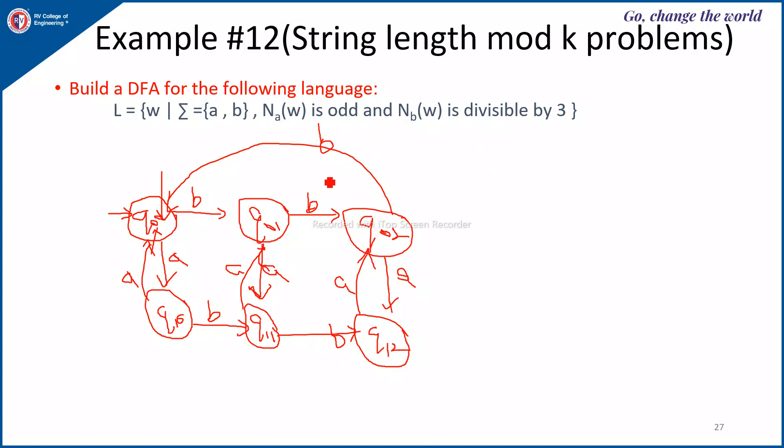So now identifying the final state here, it is odd, so number of A, A count should be odd. So it means the first index should be 1 and number of B's is divisible by 3, so the second index must be 0. So it is 1, 0 is the final state.